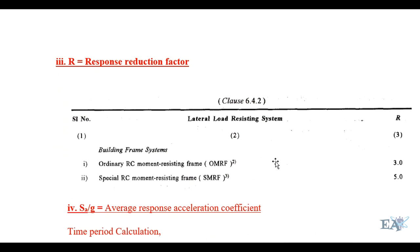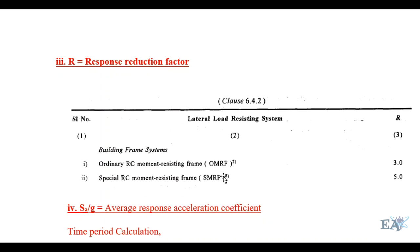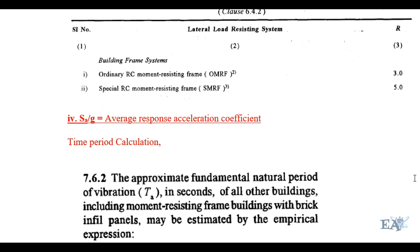R is the response reduction factor. If the building is an Ordinary Moment Resisting Frame (OMRF), R is taken as 3. If the building is a Special Moment Resisting Frame (SMRF), R is taken as 5.